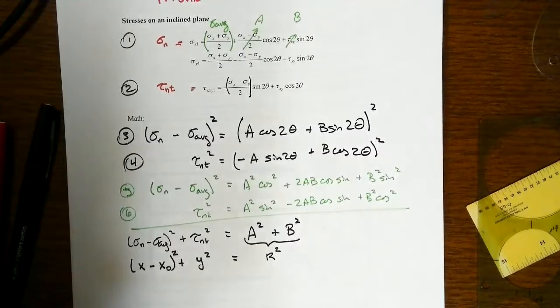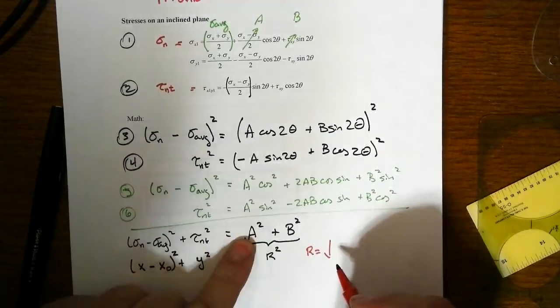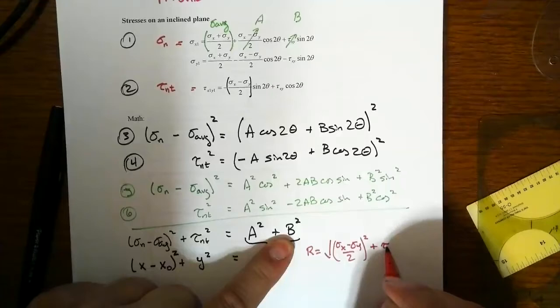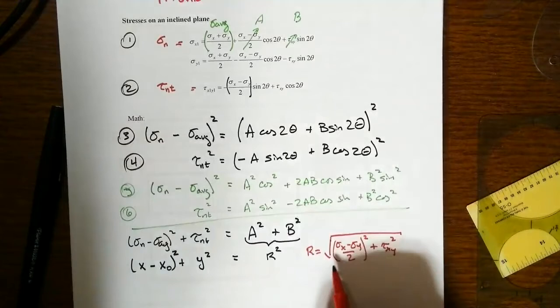All right, let's look at a couple of things. This whole R business, the R is going to be equal to the square root of this stuff here. A was our sigma X minus sigma Y divided by two quantity squared. Our B term was the tau X, and that's also squared. So there's your radius for this.